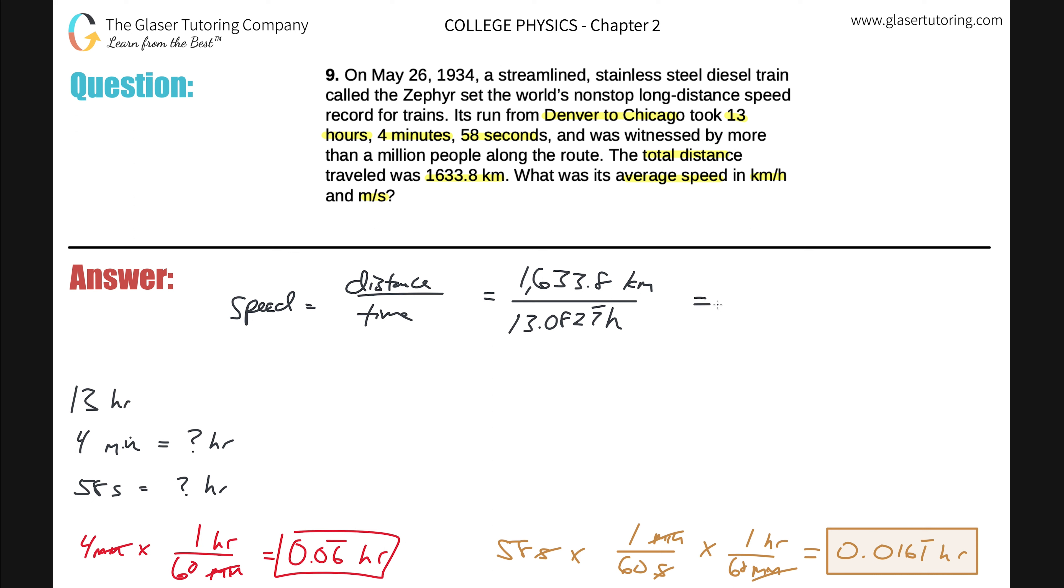Now just simply do the division. 1633.8 divided by that answer of 13.0827. And we're going to come up with 124.88 kilometers per hour. And if you leave it as just H as I have here or HR, it doesn't really make a difference. But that would be now the answer in kilometers per hour.